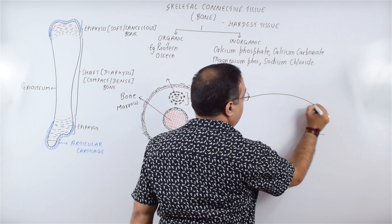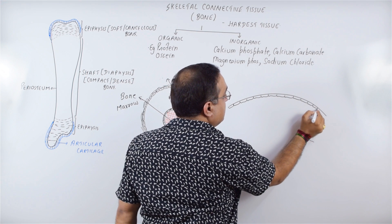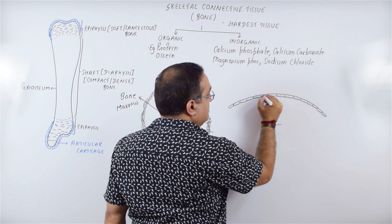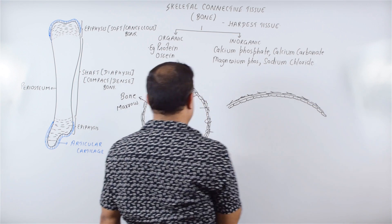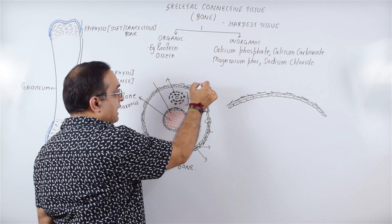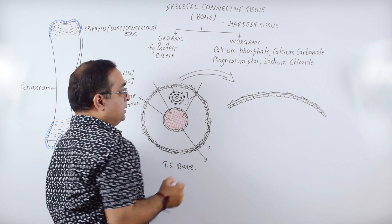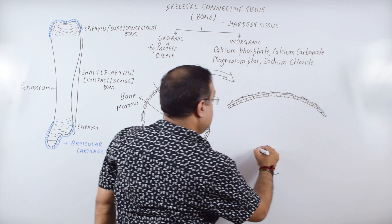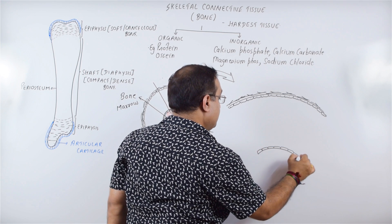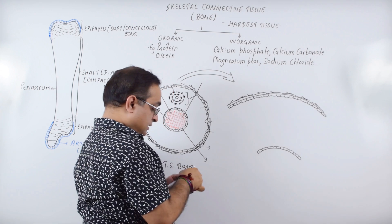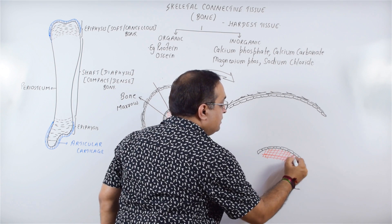Let's look at an enlarged view of a selected area of the transverse section. This layer being drawn shows the osteoblasts and collagen fibers. You can see the collagen fibers and osteoblasts. This is the endosteum, which also has osteoblasts. The endosteum covers the bone marrow, which is the hemopoietic or blood-forming tissue.